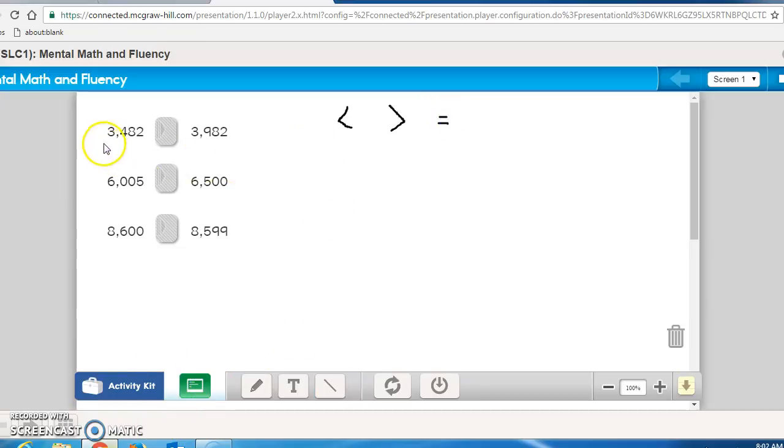Let's look at number one. We can first look at the thousands place, and we can see that they both are three, so their value is 3,000. Our next place value is the hundreds place. This one has a four, this one has a nine. Right away, you should notice that four is less than nine. So 3,482 is less than 3,982.